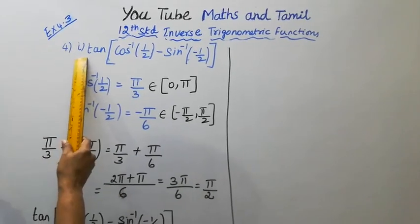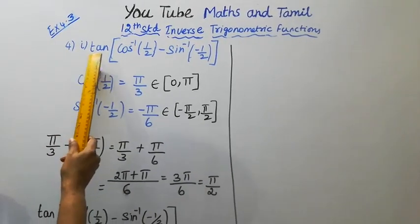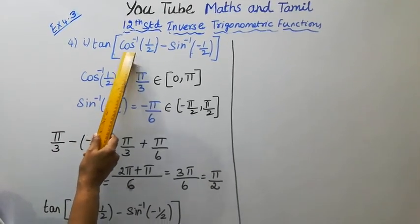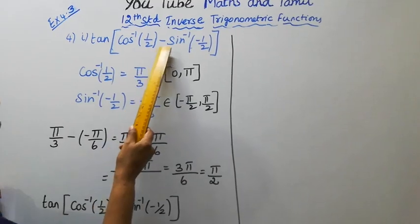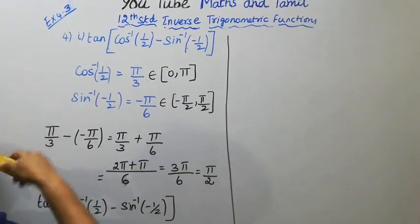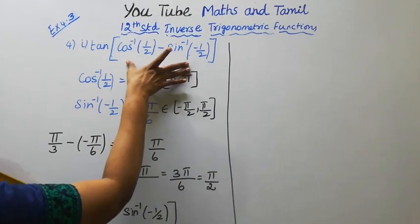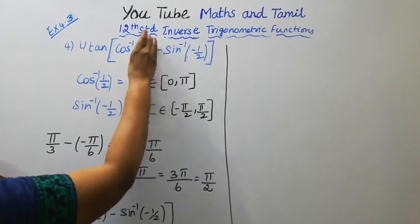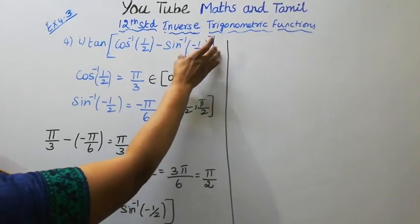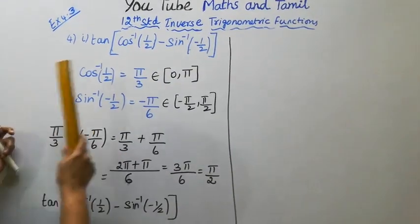The first subdivision: find tan of cos inverse of half minus sin inverse of minus half.